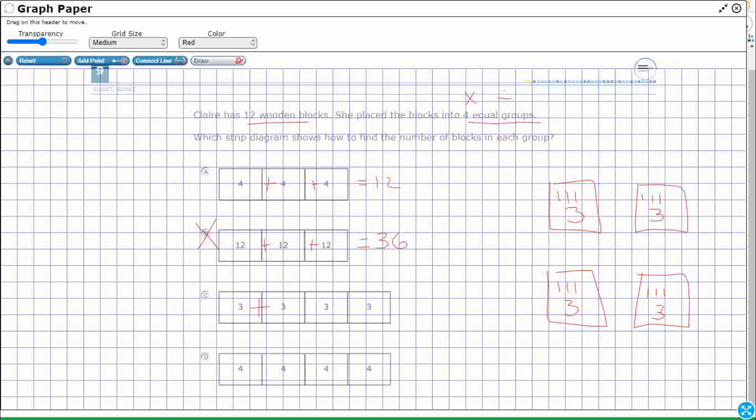We've got C, 3 plus 3 plus 3 plus 3, okay? That makes 3, 6, 9, 12.